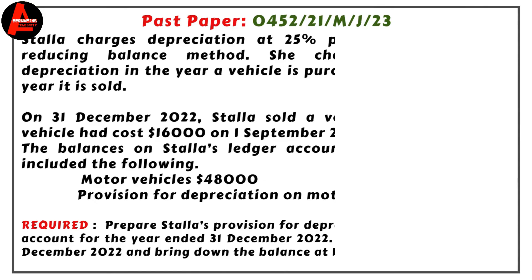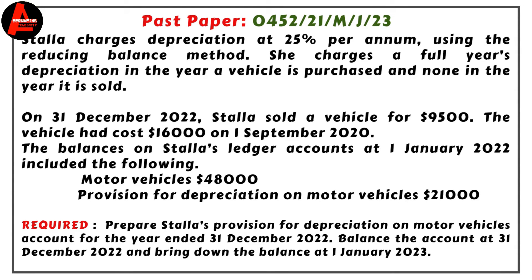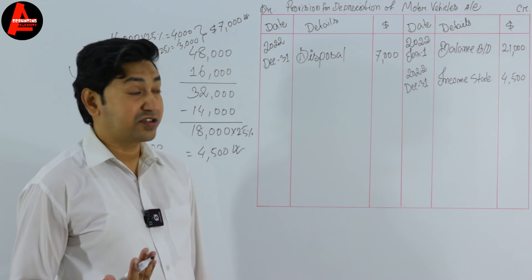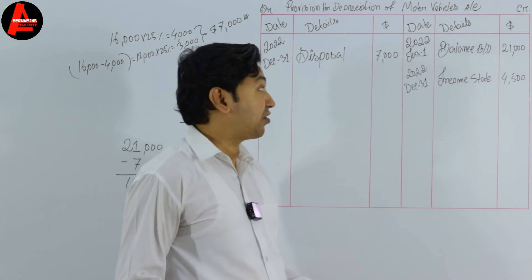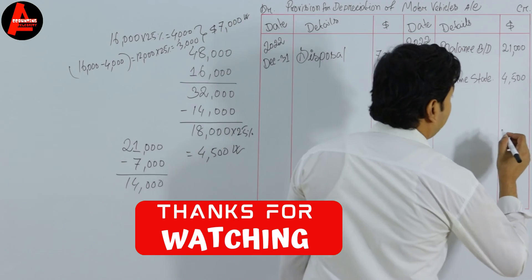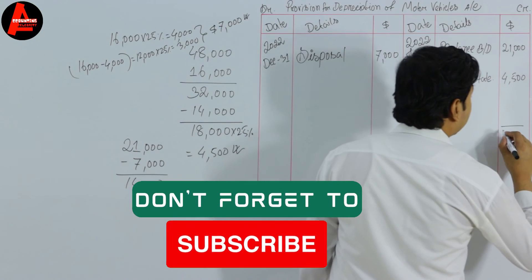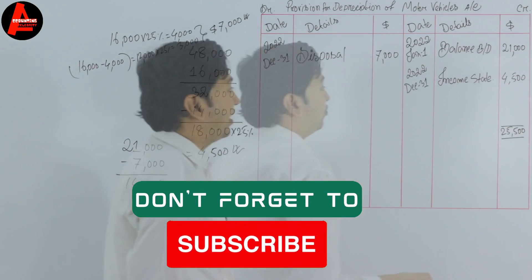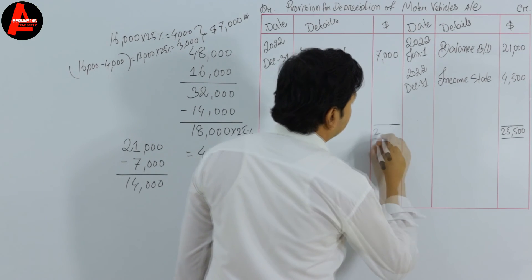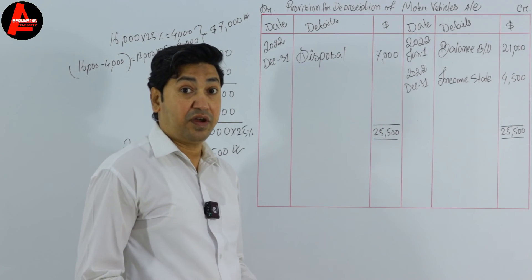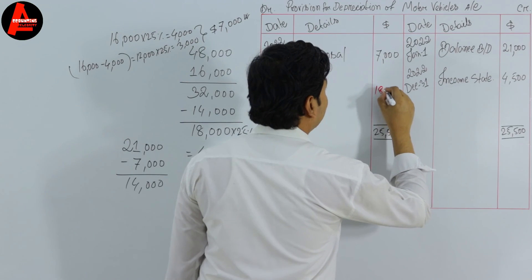Now we need to balance the account. The question asks us to balance at 31st December 2022 and bring down the balance on 1st January 2023. The credit side is greater, so we sum it up: $21,000 + $4,500 = $25,500. We then place $25,500 on the debit side as the total, and subtract $7,000 (disposal) to get the closing balance of $18,500.